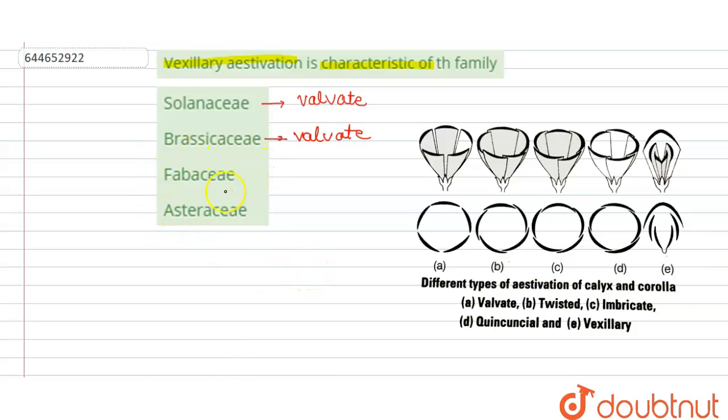Then when we come to the next, that is Fabaceae family, it is known to have imbricate or vexillary kind of aestivation. This kind of aestivation in which the outer petal overlaps